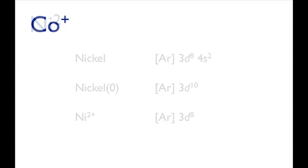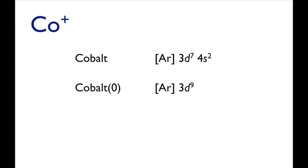The last example is cobalt 1+. A cobalt atom has the electronic configuration [Ar] 3d⁷ 4s². In a compound, the electronic configuration for cobalt(0) is [Ar] 3d⁹, with the two 4s electrons promoted into the 3d orbitals.